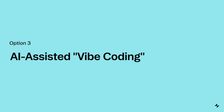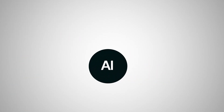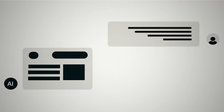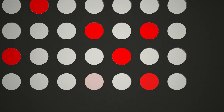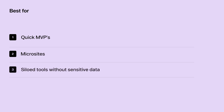Option 3 is AI-assisted vibe coding. The newest approach is working side-by-side with AI — you describe what you want in plain language, and AI helps you build it. This method allows for rapid prototyping with high visual freedom. You can iterate quickly, test features, and refine through prompts. But be careful: AI-generated code can be buggy, insecure, or hard to scale. This method works best for quick MVPs, microsites, or silo tools without sensitive data. Use it for ideas, not infrastructure.